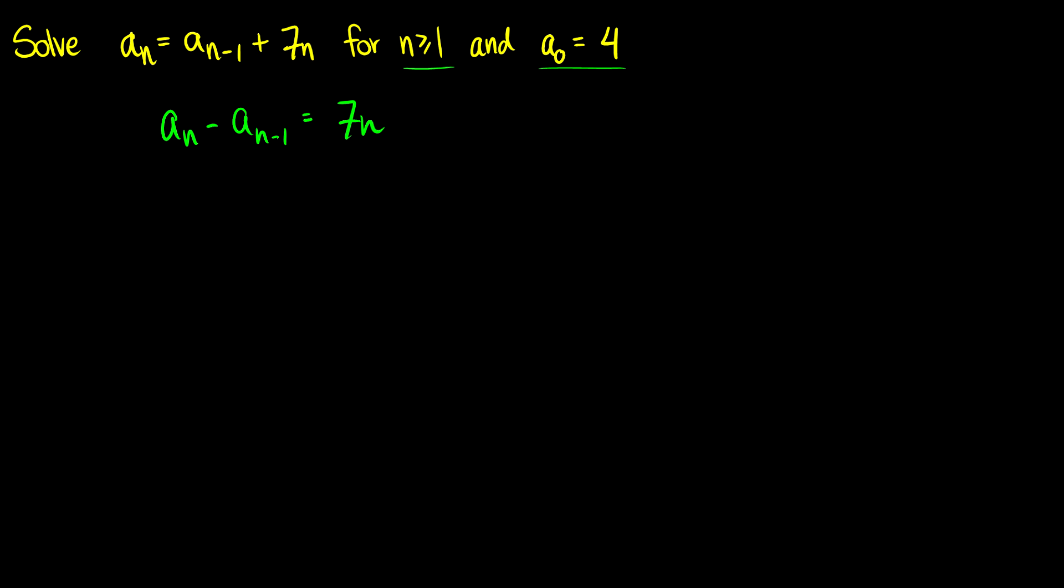Okay, so here is what people generally forget. If we have an minus an minus 1 is equal to some function of n, then we have a very simple solution. We have that our recurrence relation an is equal to a0 plus the sum from i equals 1 to n of f of i. So this is our function evaluated i from 1 to n.